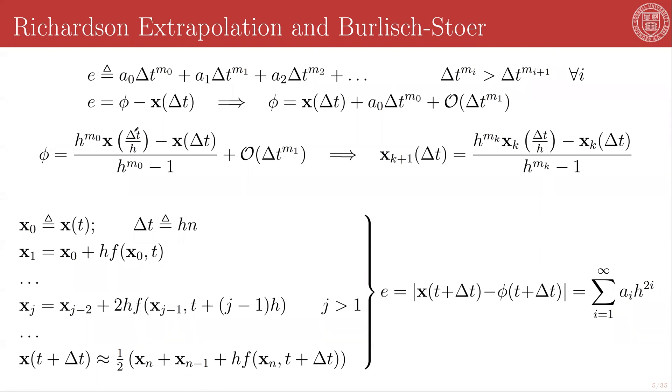We're going to substitute Δt/h for Δt for some value h, and we're going to multiply this entire thing by h^{m_0-1}. And when the smoke clears, we will have an expression that looks as follows: φ is going to look like h^{m_0} times x(Δt/h) minus x(Δt), all divided by h^{m_0-1}, plus terms of order Δt^{m_1}.